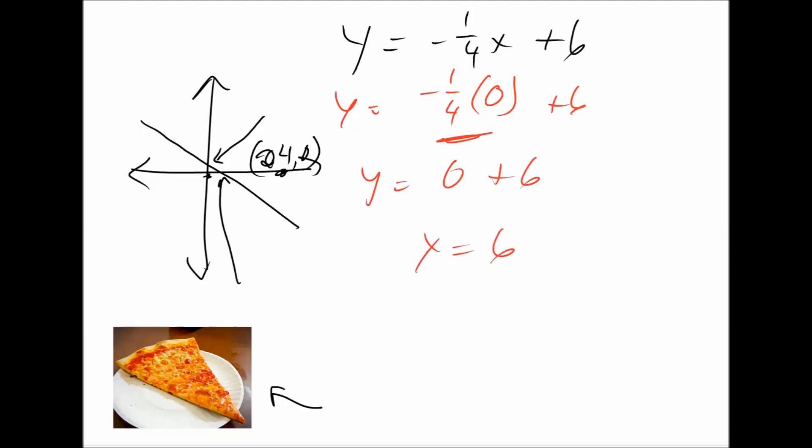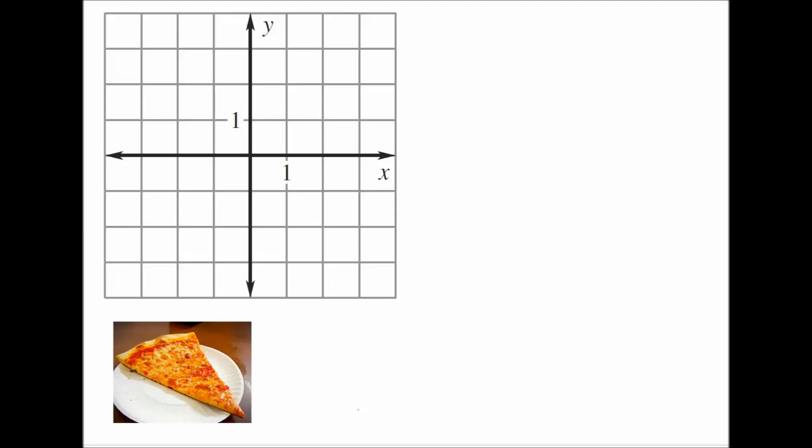But you actually already knew this because the y-intercept is actually in an equation in slope-intercept form. You can, of course, do this to check it. But in slope-intercept form, the y-intercept is already there. I just plugged this in so you guys could see how that works for y.